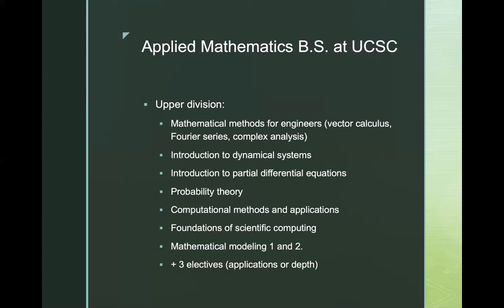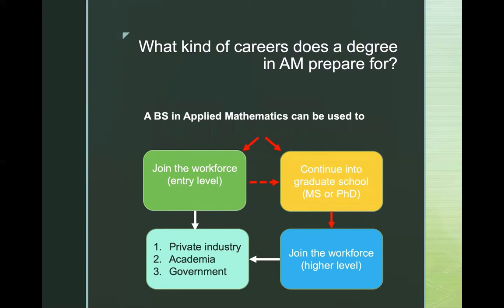And finally, you will be required to take three additional electives, where you can either learn applied mathematical tools in more depth or focus on new areas of application. This might also help you combine a double major or a major-minor combination. An undergrad degree in applied mathematics can either be used to directly join the workforce at the entry level, or to continue to graduate school for a master's or a PhD, either in applied mathematics or in one of the areas of applications of your choice.